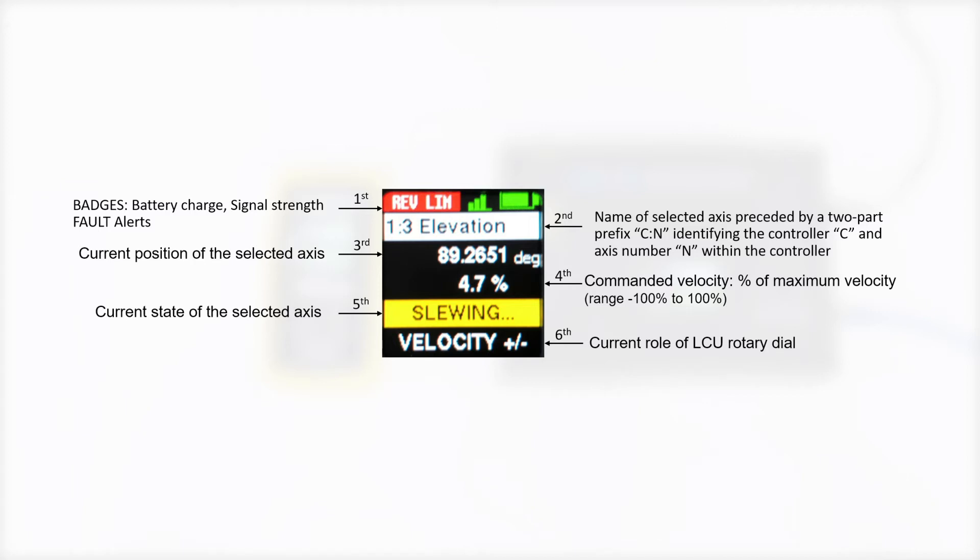The unit of measure for the position depends on the configuration of the selected access. The fourth line shows the commanded velocity. This is shown as a percentage of the maximum velocity for that particular access. The next line shows the current role of the rotary dial which depends on the current state of the selected access.